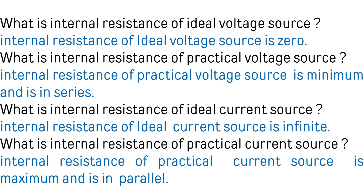What is the internal resistance of an ideal voltage source? The internal resistance of an ideal voltage source is zero. What is the internal resistance of a practical voltage source? The internal resistance of a practical voltage source is minimum and is in series. What is the internal resistance of an ideal current source? The internal resistance of an ideal current source is infinite. What is the internal resistance of a practical current source? The internal resistance of a practical current source is maximum and is in parallel.